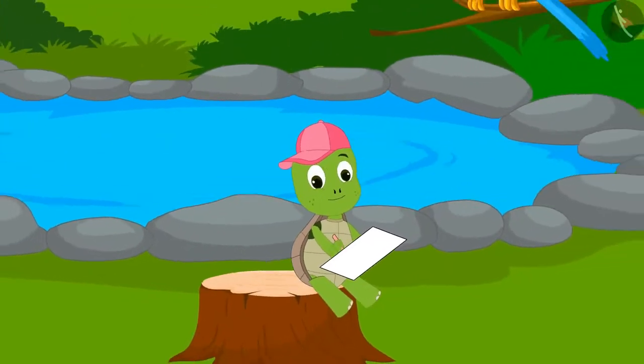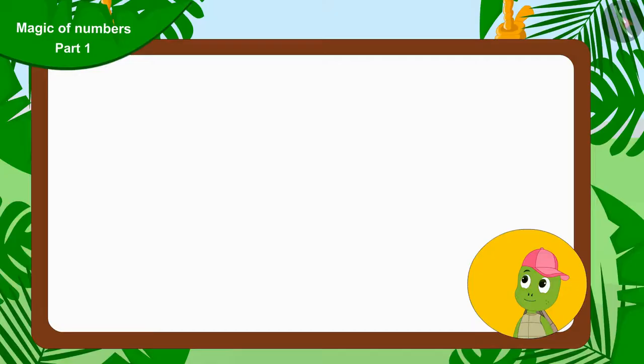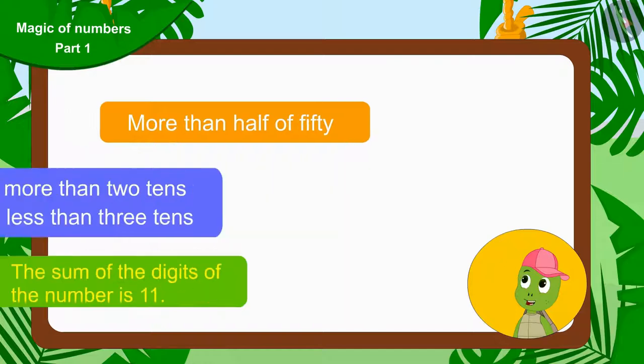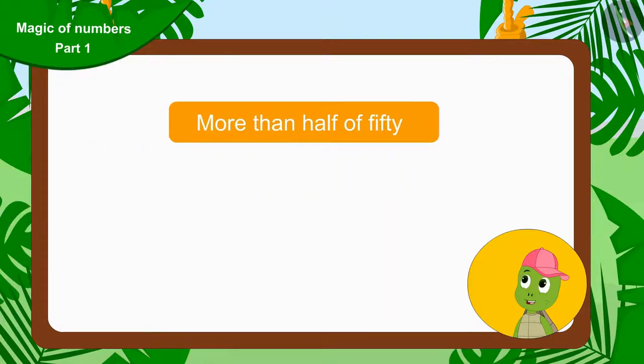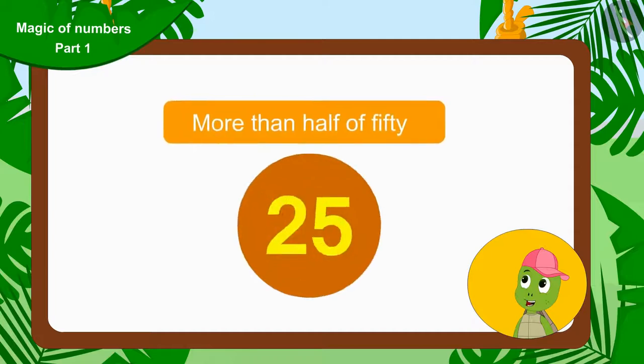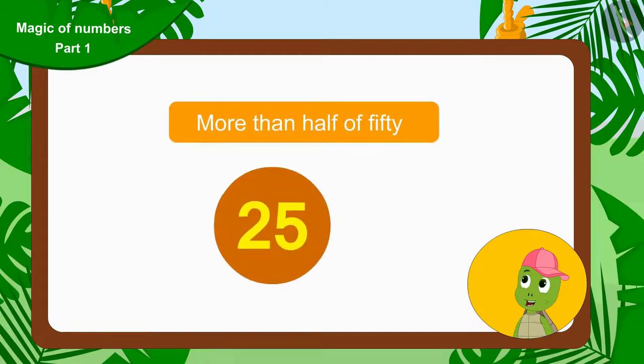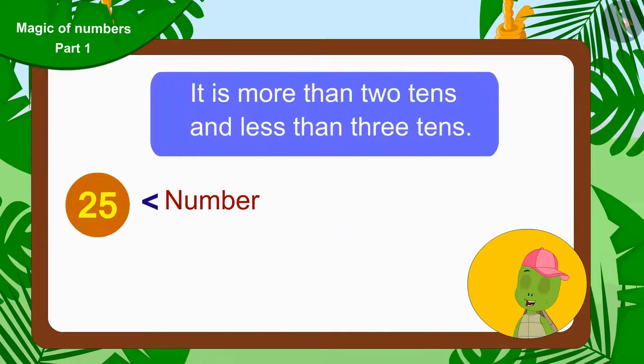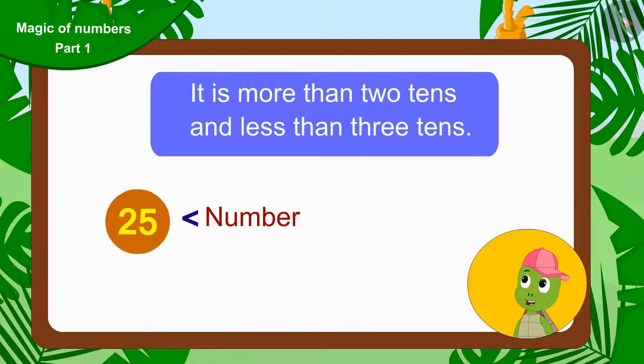Tufan wrote down all the hints of the bird on a paper like this. And then began to solve each one of them. The number is more than half of 50. Half of 50 will be 25. This means this number is greater than 25. According to another hint, this number is more than two tens and less than three tens. That means this number is more than 25 and less than 30.